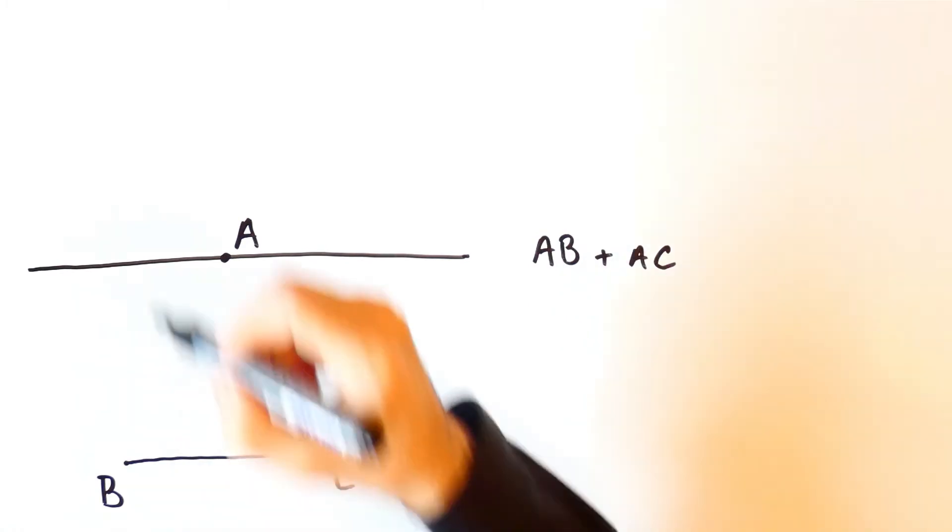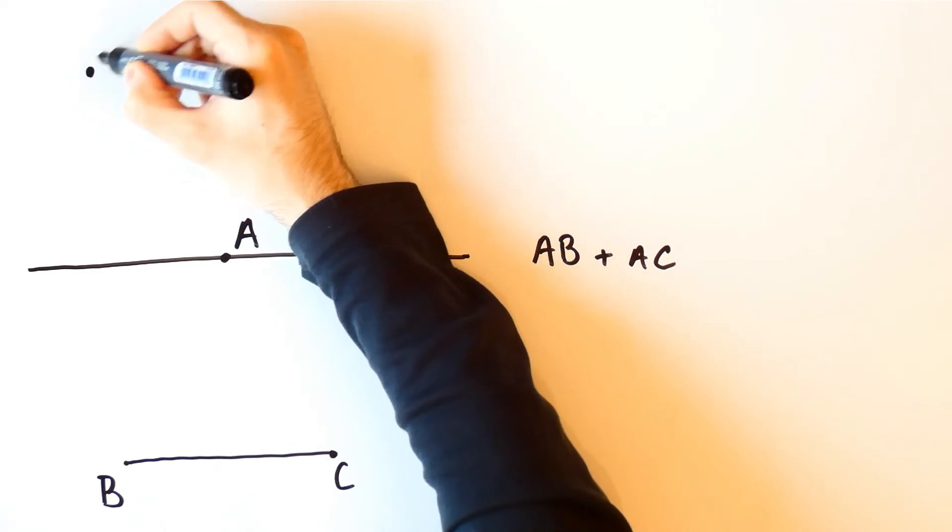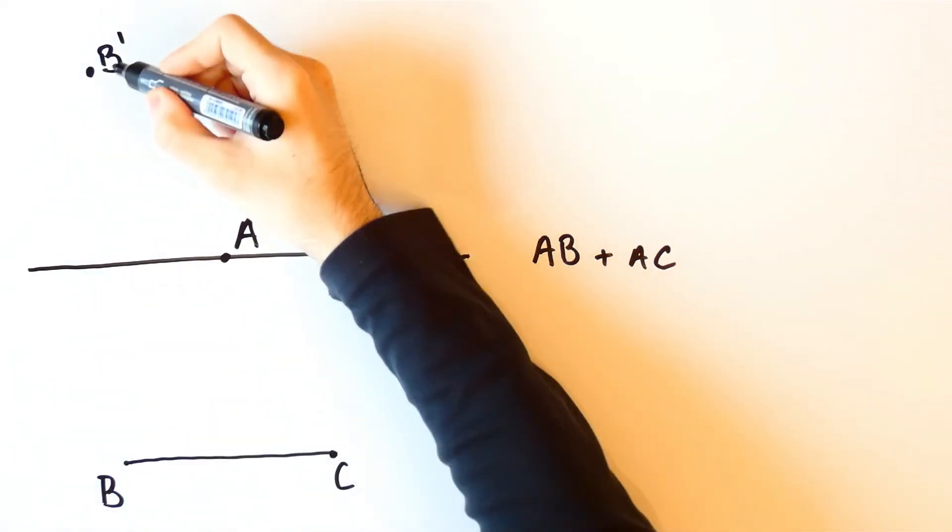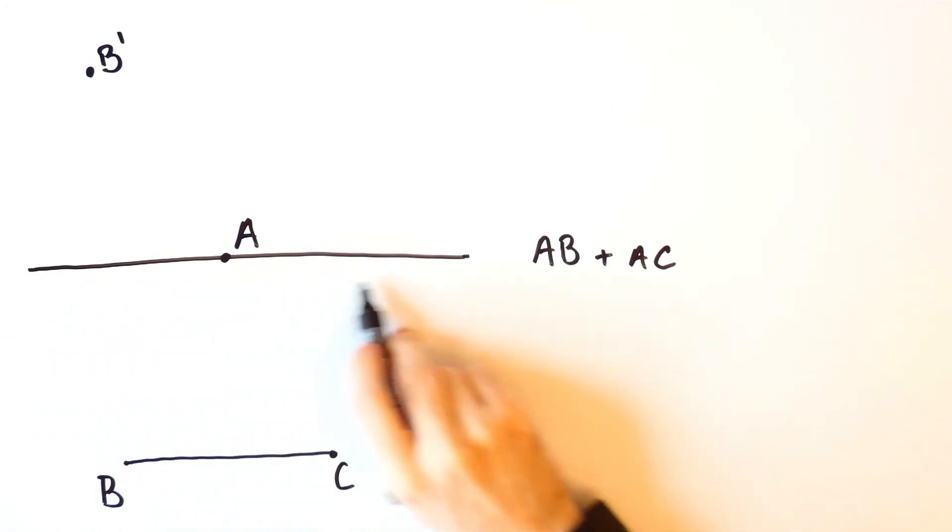To do that we will first look at the point B prime such that B and B prime are symmetrical with respect to this line.